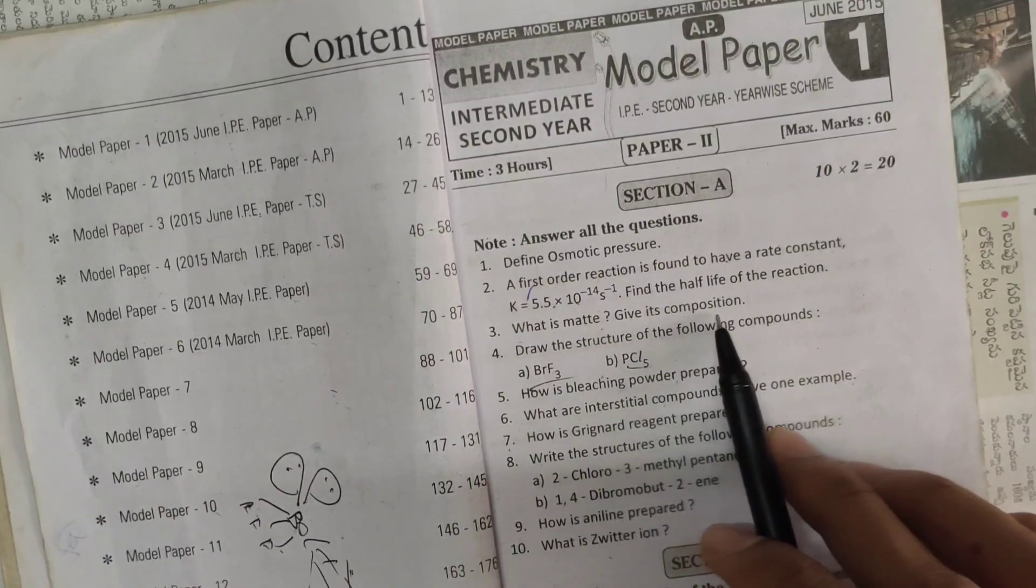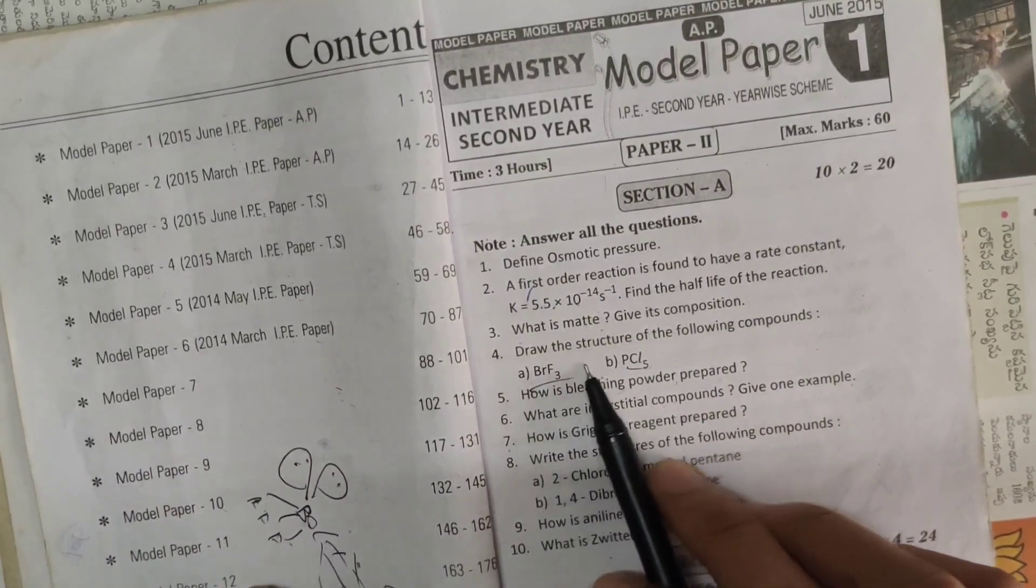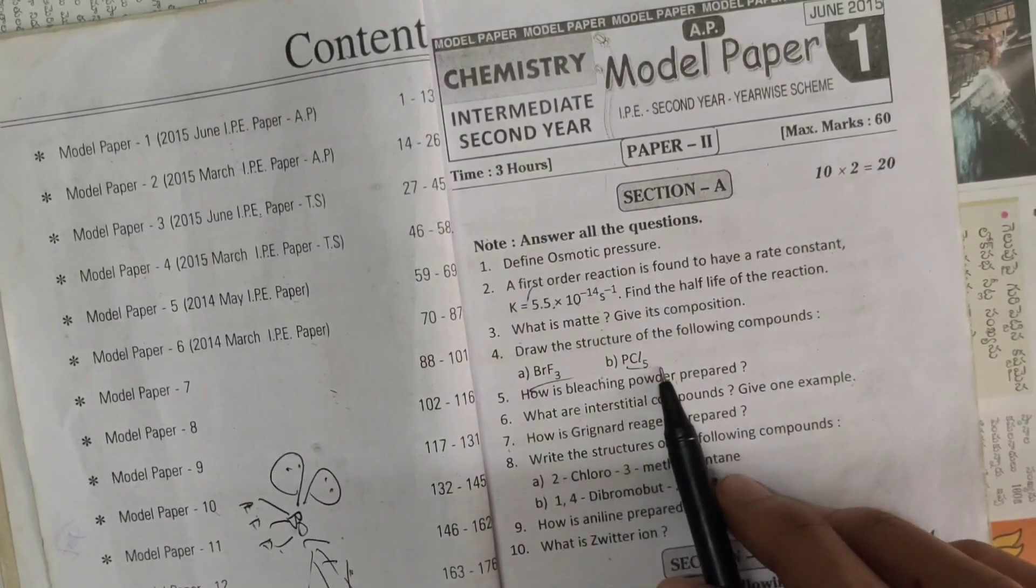Next one, what is matte, give its composition. And next one, draw the structure of the following compounds: BrF3, PCl5.